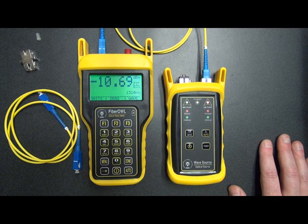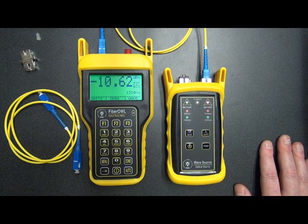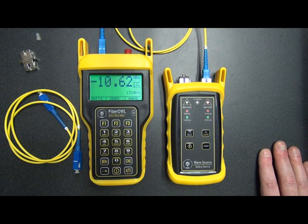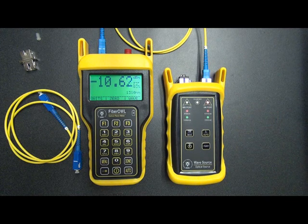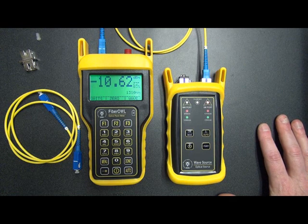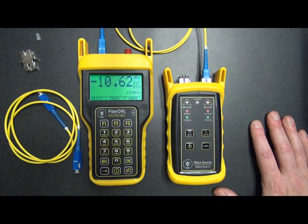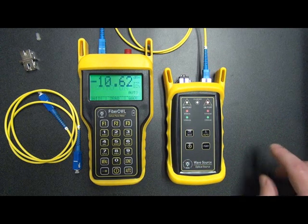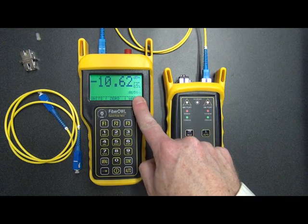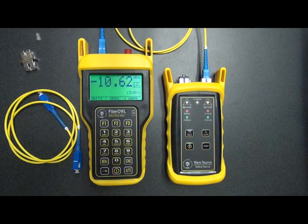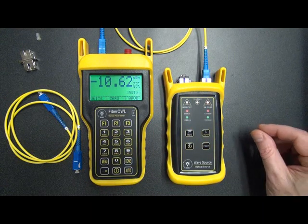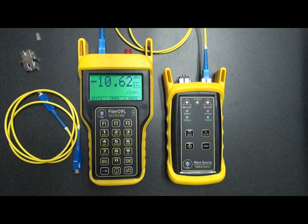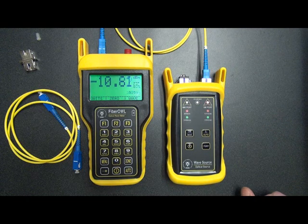It's also a good idea to check 1550 nanometers. So we would have to switch both units to 1550 nanometers to check that wavelength. But what I'd like to do here is demonstrate a nice feature of the Fiber Owl and the wave source when used together, and that's called auto mode. Auto mode allows the wavelengths to switch automatically. Simply done on the Fiber Owl by pressing the auto button. You'll see it says auto on. The wavelength indicator will now say 1310 auto and it will be switching back and forth between those two words. What this means is that the Fiber Owl is receiving light but it's not receiving an auto testing signal. It's just scanning incoming signals for auto, which it's not getting at this point.